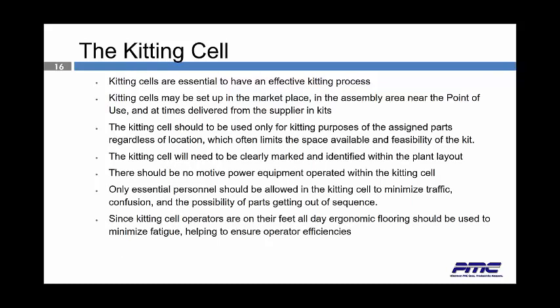Kitting cells are essential to have an effective kitting process. Kitting cells may be set up in a marketplace, in the assembly area, near the point of use, or delivered from the supplier in kits. The kitting cell should be used only for kitting purposes of the assigned parts, regardless of location. The kitting cell should never be used as secondary storage, a parking area, or a pedestrian walkway — only for kitting. The kitting cell will need to be clearly marked and identified within the plant layout, and no motor power equipment should be operated within it. Only essential personnel should be allowed in the kitting cell to minimize traffic, confusion, and the possibility of parts getting out of sequence.